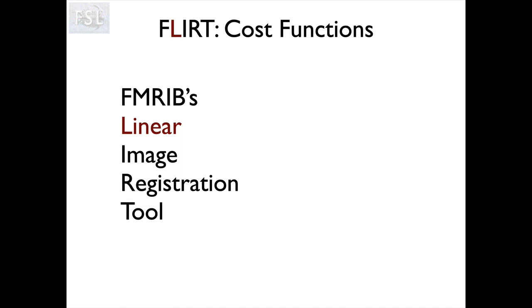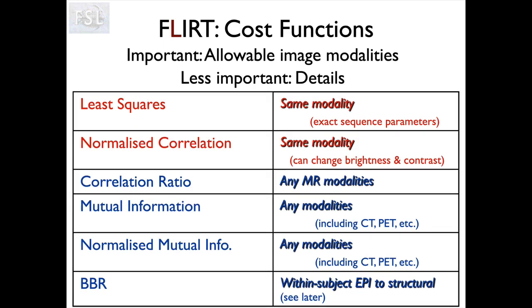There are two different tools available in FSL to do registration. One is a newer tool called FLIRT - FMRIB's Linear Image Registration Tool - and that actually has a lot of different cost functions available. In this table we show the different ones available. We're not going to take you through the mathematics behind them because you don't actually need to know how they work; what you need to know is which ones are most appropriate to use in different circumstances.